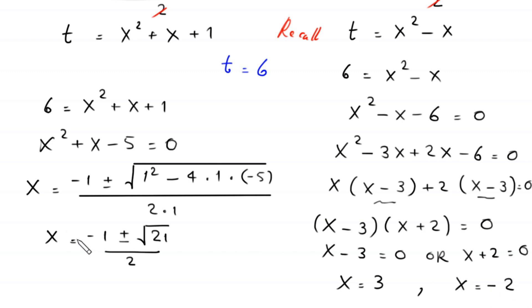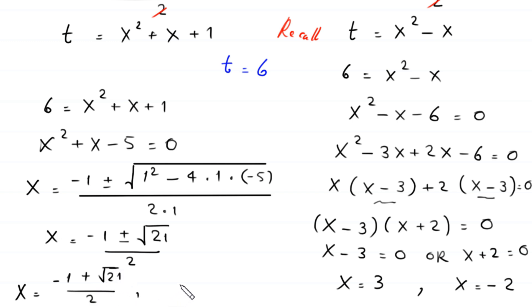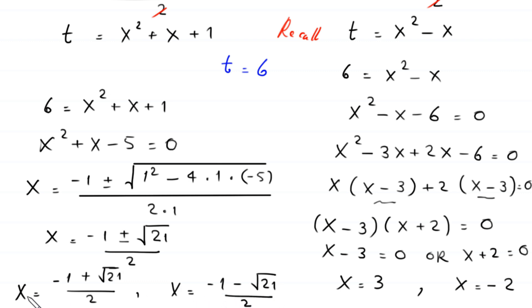From these two cases we have four candidate values of x: x equals negative 1 plus root 21 divided by 2, x equals negative 1 minus root 21 divided by 2, x equals 3, and x equals negative 2.